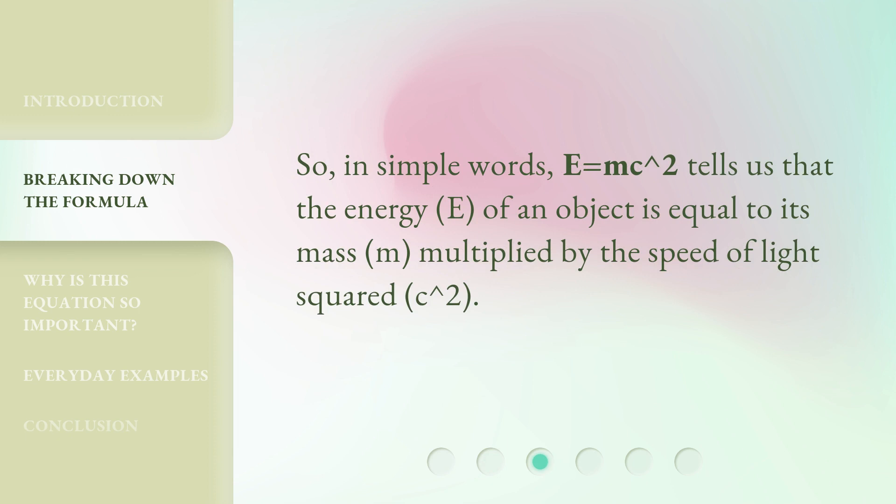So, in simple words, E equals mc squared tells us that the energy (E) of an object is equal to its mass (m) multiplied by the speed of light squared (c²).